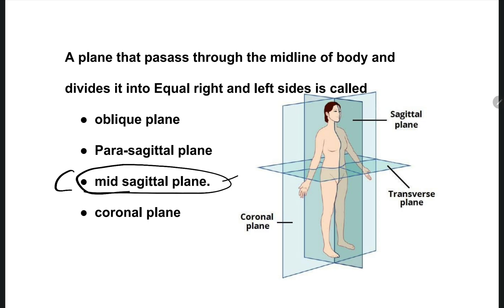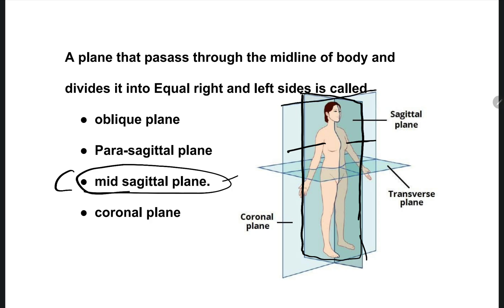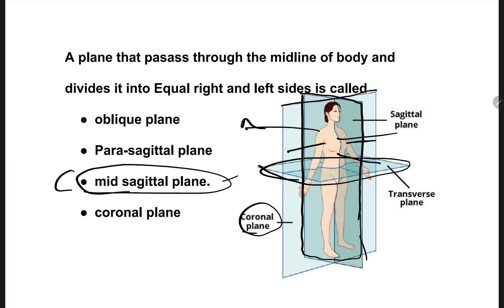Here you can see the picture. This is the midsagittal plane. When you cut the human body like this, we can make right side and left side parts. If you cut from ear to ear side, that is the coronal plane, and we can make anterior and posterior parts. In a transverse plane, we can make upper and lower parts. These are the planes used in anatomy terminology.